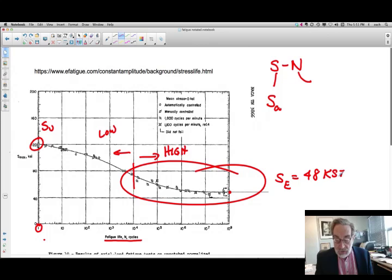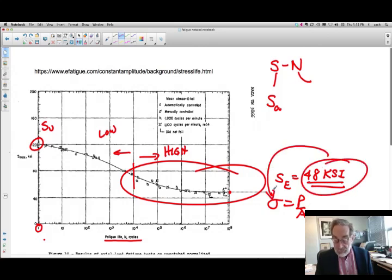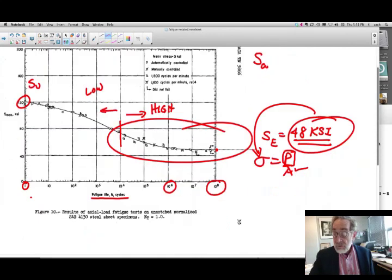So what we'd be doing is with our sigma is equal to P over A, we would put that down in here for our sigma. And then we adjust our area such that for a given load, we'll make sure that we have a life of 10 to the 8th cycles. So a lot of times the endurance limit is based on 10 to the 8th and sometimes on 10 to the 6th, which is a million cycles. So the other thing I want to show you then is that when I come down here,